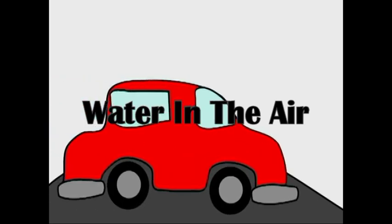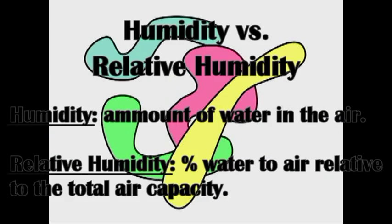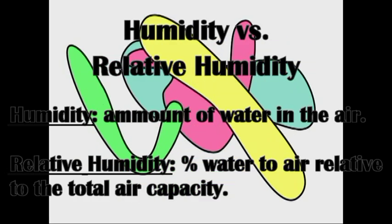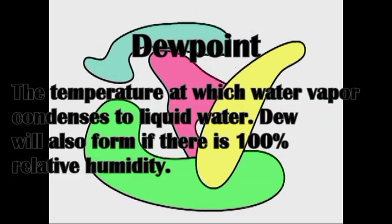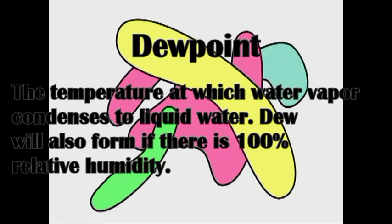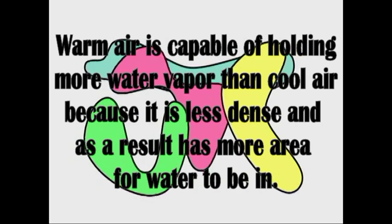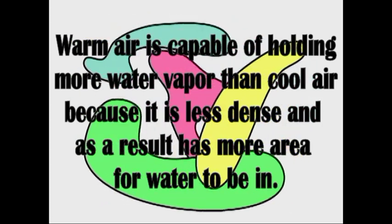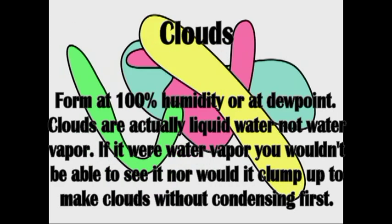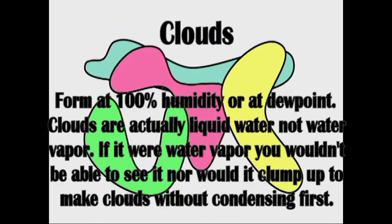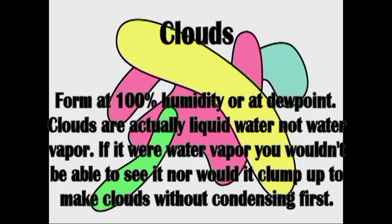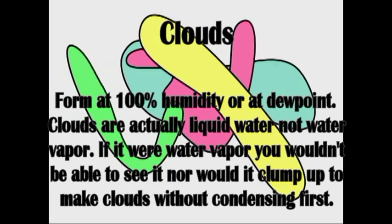The next thing we'll discuss is water in the air. The amount of water in the air is the humidity, not to be confused with the relative humidity. The relative humidity is the percent of water vapor in the air in comparison to the total air capacity. Dew point is the temperature where water vapor condenses to water, and 100% relative humidity will also trigger the dew point. Warm air holds more water than cool air because warm air particles are farther apart, allowing more room for water. Clouds form at 100% relative humidity or at the dew point. A common misconception is that clouds are not actually water vapor — they are liquid water in the air. If it were water vapor, you wouldn't be able to see it, and it wouldn't coalesce like it does.